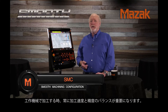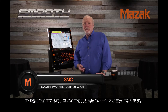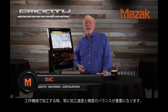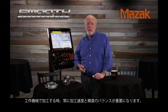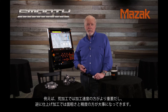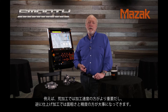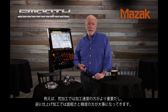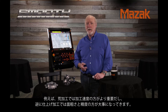Anytime you process a part on a machine tool, a balance is always sought between speed and accuracy. For example, when roughing a part, speed is much more important than accuracy, but when finishing, surface finish and accuracy are far more important than speed.